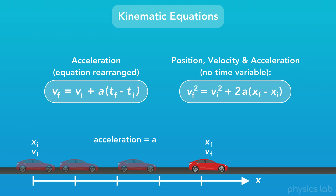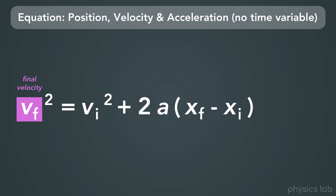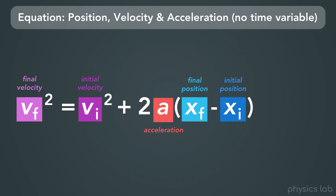With the equation on the left, we're using the change in time, and with this new equation on the right, we're using the change in position. The left equation can tell us the car's velocity based on how much time the car has been accelerating for, and the right equation can tell us the car's velocity based on how much distance the car has been accelerating over. The variables in this new equation: VF stands for final velocity, VI is initial velocity, A is acceleration, XF is final position, and XI is initial position.